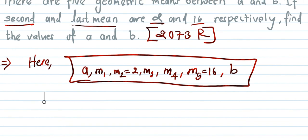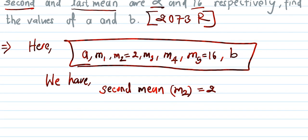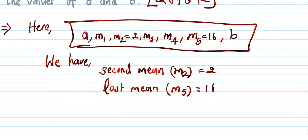So first of all, we have: second mean m2 equals 2, and last mean — which is m5 — is given as 16. So m2 = 2 and m5 = 16.